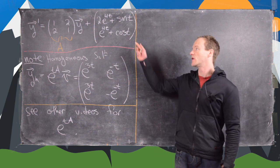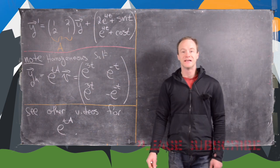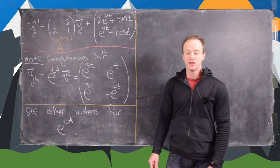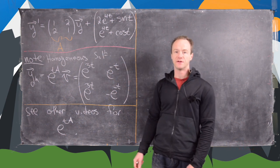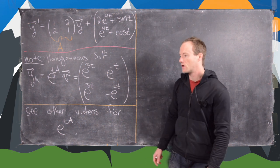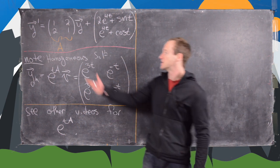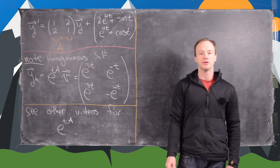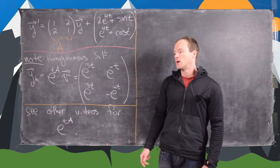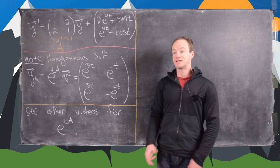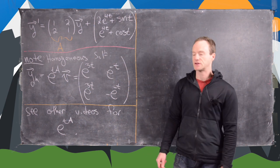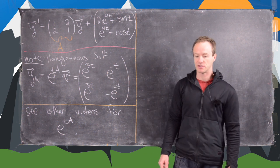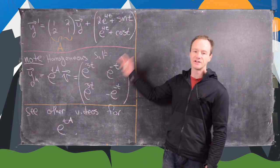In this video we're going to solve this non-homogeneous system of differential equations given by this matrix equation using the method of undetermined coefficients. It turns out for non-homogeneous differential equations where you have a matrix, you can use a lot of the methods from the theory of a single differential equation in order to solve systems of differential equations — and that's what we're going to see here.